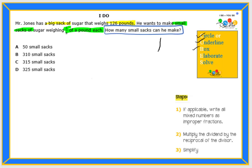Let's represent this big sack of sugar and it has 126 pounds in it. But what Mr. Jones is going to do is take all the sugar in that big sack and pour it into smaller sacks, and each sack is going to be exactly the same size of two-fifths of a pound.